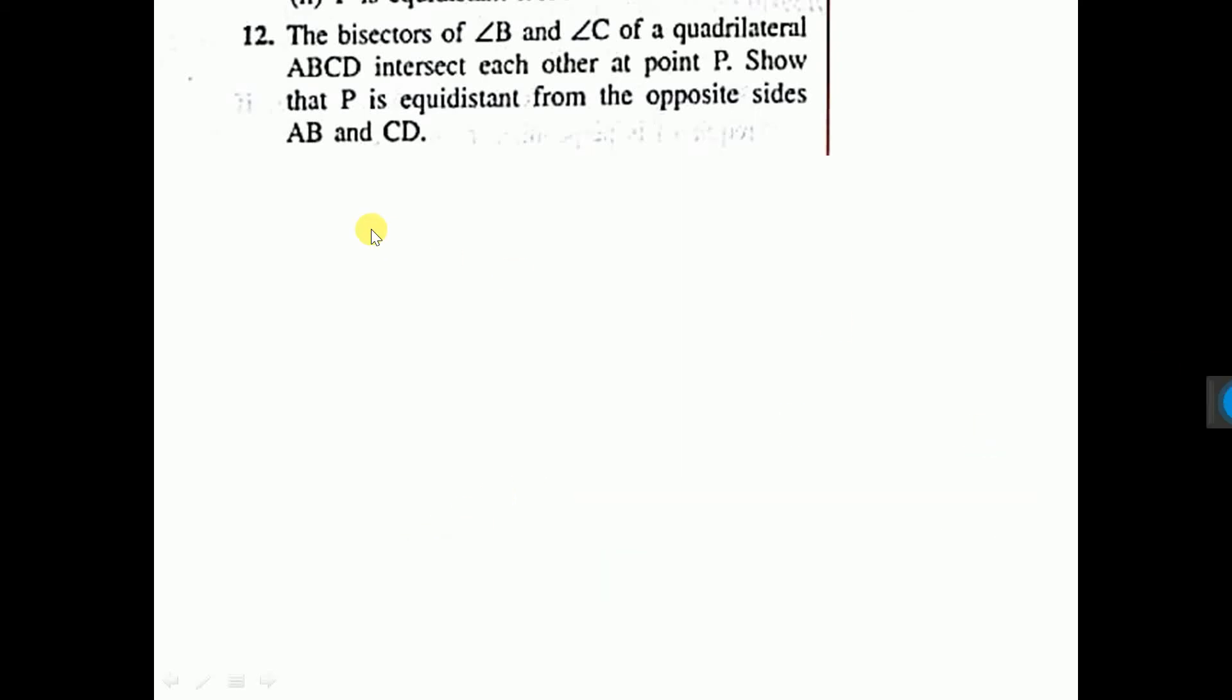The bisectors of angle B and angle C of a quadrilateral ABCD intersect each other at point P so that P is equidistant from opposite sides AB and CD.